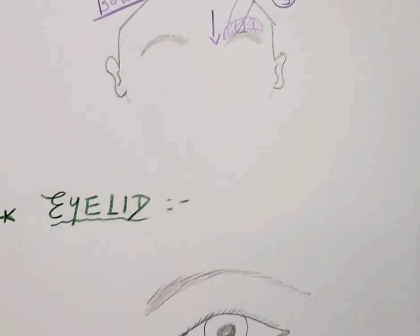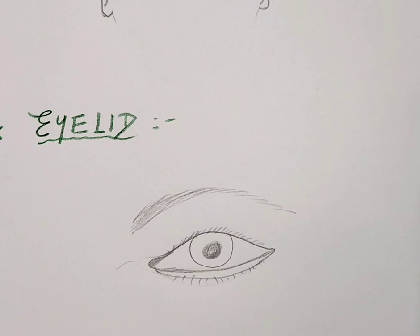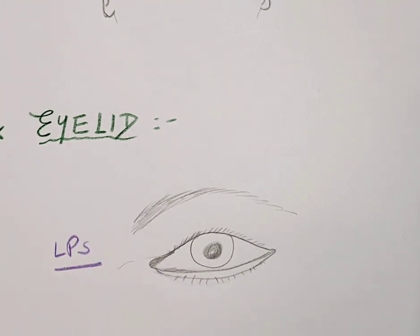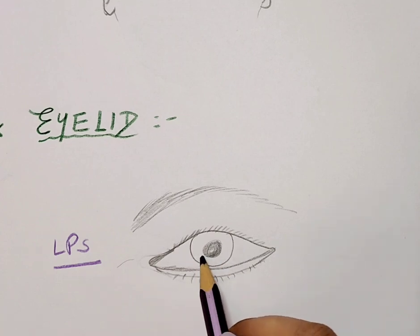Moving to the region of the eyelid — the temporalis muscle transfer and temporalis sling is an important topic that will be covered separately in another video. For the eyelid, in certain cases of lid lag, the levator palpebrae superioris is overacting while the orbicularis oculi muscle is weakened, leading to a problem in eyelid closure. This creates a risk of corneal exposure.